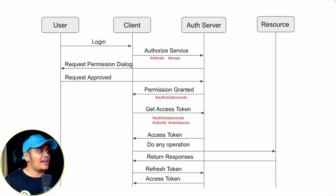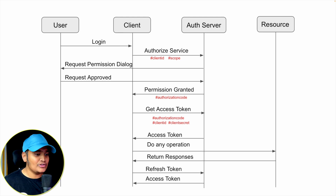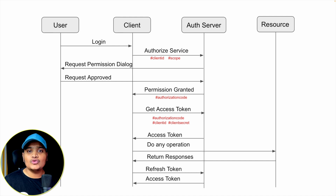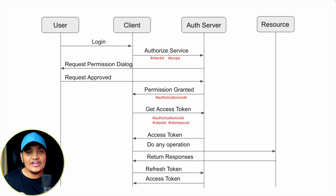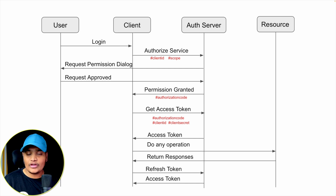If you see this slide, there are simple terms: user, client or server, and resources. What you want to do is authenticate your requests. Suppose you have your Google account, Facebook account, and other accounts. When you're trying to use some other application, there will be options to login with Google, login with Facebook, login with LinkedIn, login with GitHub, and so on. Those are nothing but OAuth 2 authentications provided by those authentication servers.